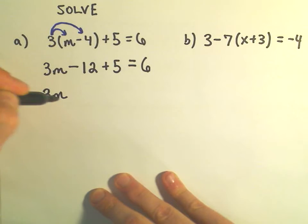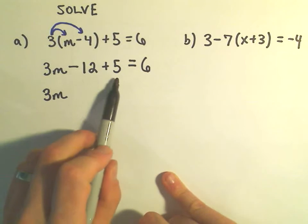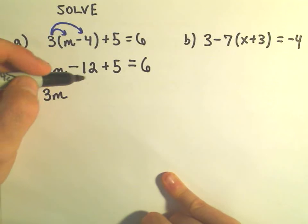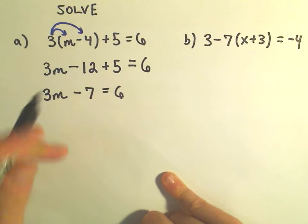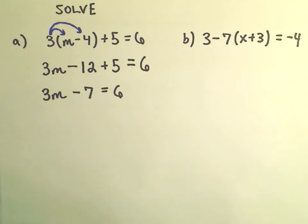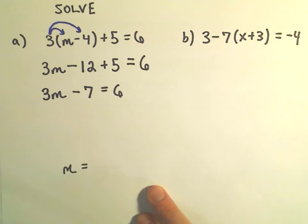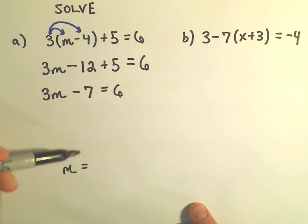And now I'm going to combine some like terms because I have a negative 12 and a positive 5, negative 12 and positive 5 is negative 7 equals 6 still, and I want to do some steps so that I get eventually just m all by itself, that's what I'm trying to get down to.